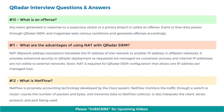Next, what are the advantages of using NAT with QRadar SIEM? Network address translation translates the IP address of one network to another IP address in a different network. It provides enhanced security to QRadar deployment, as requests are managed via a conversion process and internal IP addresses are not visible to external networks. Static NAT is required for QRadar SIEM configuration, which allows one IP address per managed host.